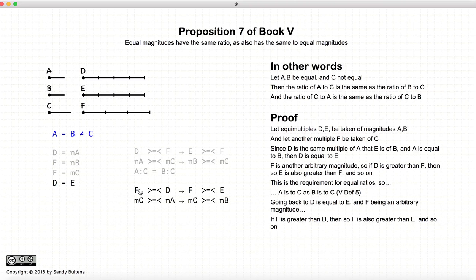Again, substituting that f is equal to mC, d is equal to nA, mC, nB, we now have the definition for equality between the ratios of c, the ratio of c to a is equal to the ratio of c to b.